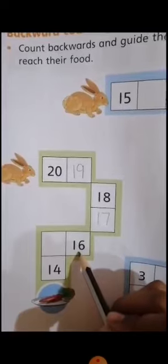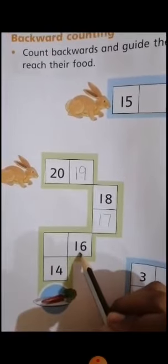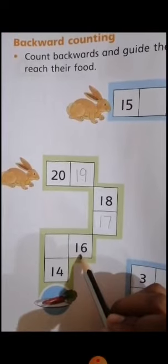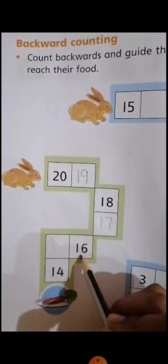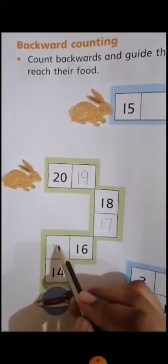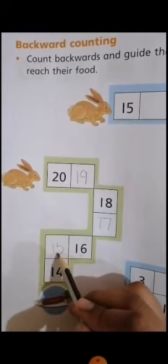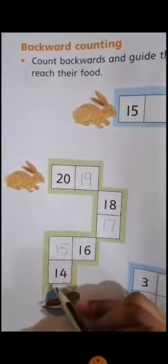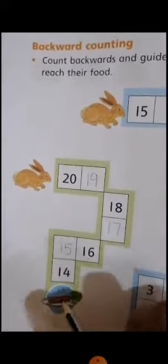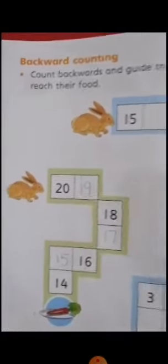Now the number comes 16. After 16, what number comes in backward counting? 15. 1 and 5. 15. And then 14. Here you have to guide the bunny to the food, which is the carrot.